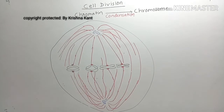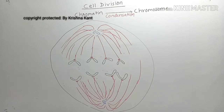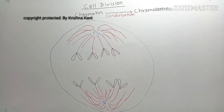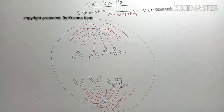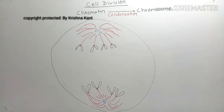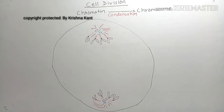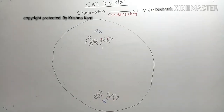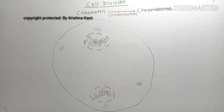During anaphase, the chromatids are separated due to shortening of the spindle fibers. The chromatids move toward the opposite poles, where they arrive and become uncondensed. They lose their individual identity and become tangled with each other.